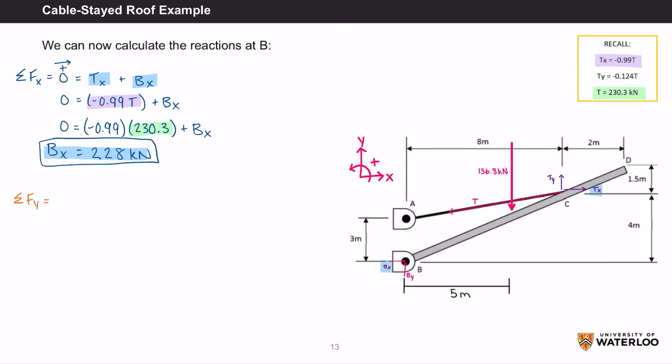The net force in the y direction equals 0, which equals Ty subtract 136.8 kN plus By. Remembering that Ty equals negative 0.124t and T equals 230.3 kN, you get By equals 165.4 kN.